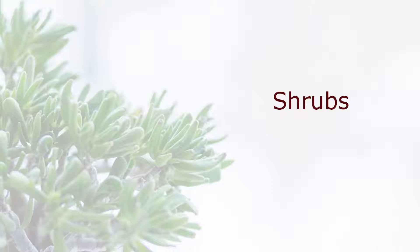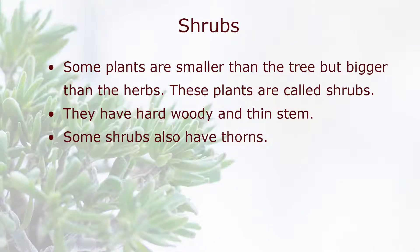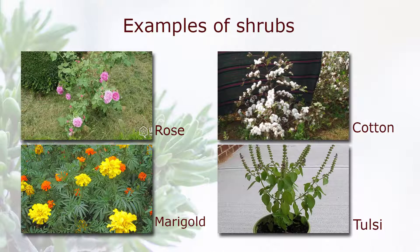Shrubs. Some plants are smaller than a tree but bigger than herbs. These plants are called shrubs. They have hard, woody, and thin stems. Some shrubs also have thorns. Examples of shrubs: rose, cotton, marigold, and tulsi.